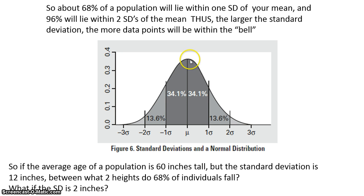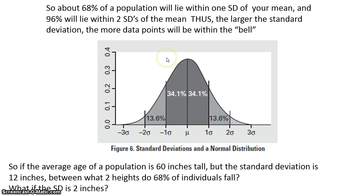In other words, if 60 inches tall is our average and the standard deviation they give you is 12 inches, then that means that 68% of our data lies between 60 inches plus 12, which is 72, and 60 inches minus 12, which is 48. So 68% of our sample would lie between 48 and 72.